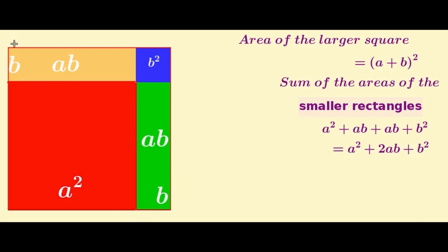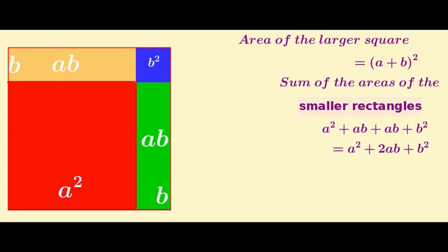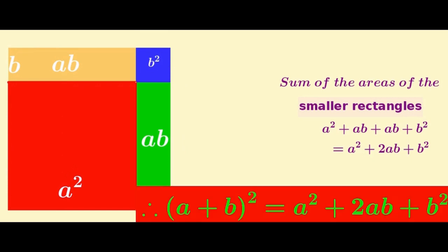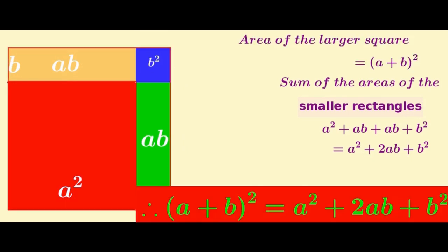The area is equal to a squared plus 2ab plus b squared.